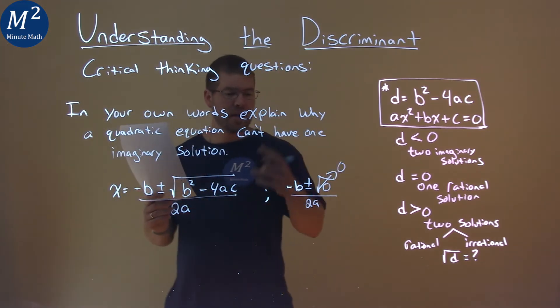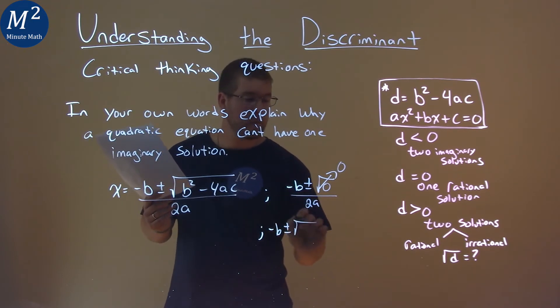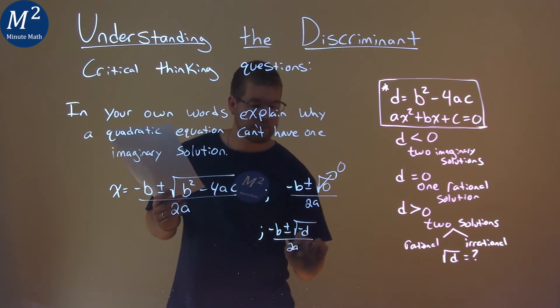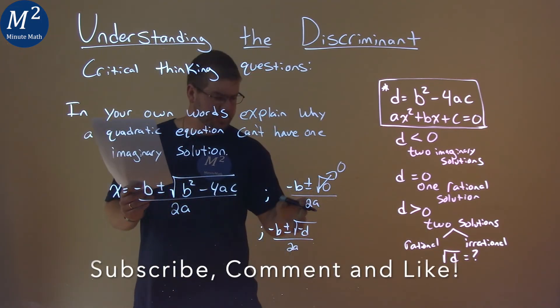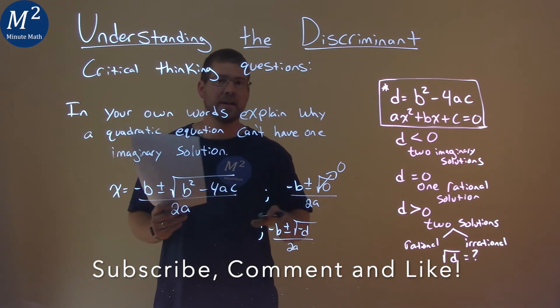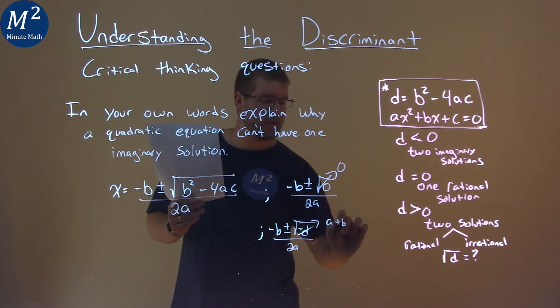But if inside that discriminant is a negative number, we have negative b plus or minus here, the square root of a discriminant value, and that's going to be a negative, so it's going to be a negative discriminant value over 2a. Whatever that value is, the discriminant, we know it's negative. When we take the square root of that, it's going to be some imaginary number, something in the form of a plus bi.